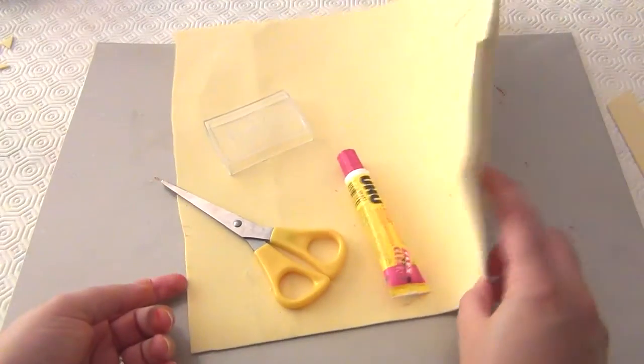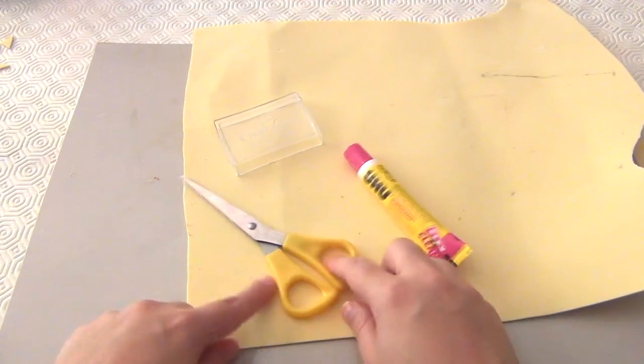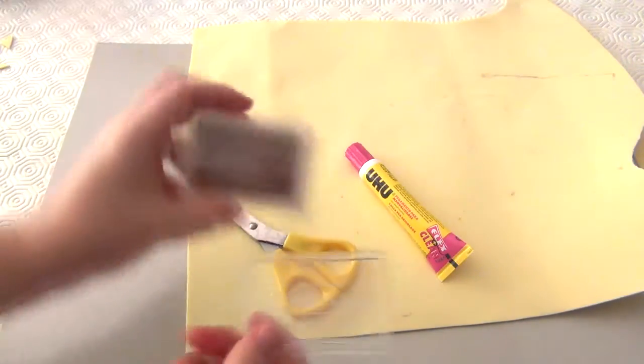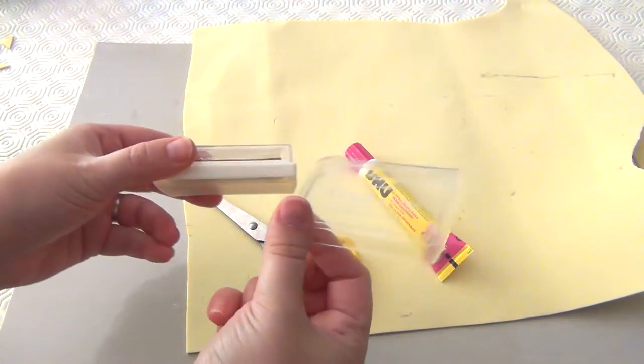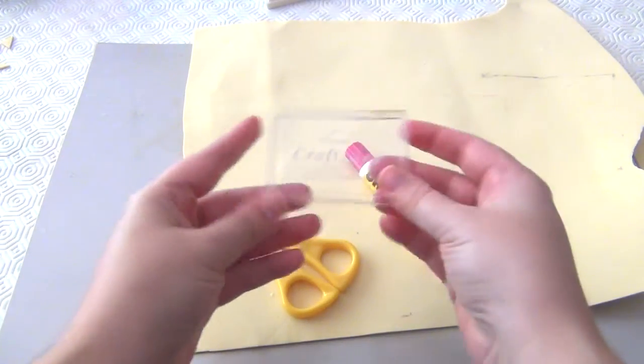For the first project you will need any sort of craft foam, glue, scissors and a transparent lead. This one for example belong to this sort of ink pad. I took advantage of something that I was not using anymore.